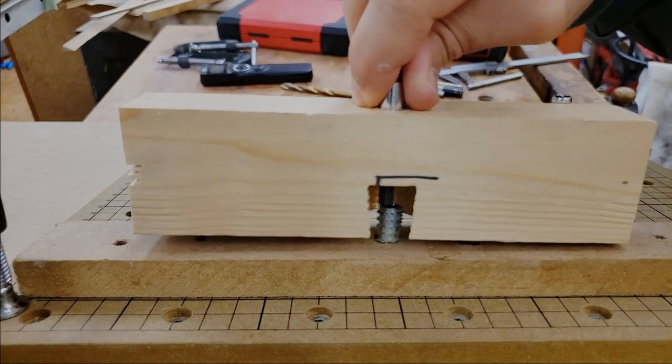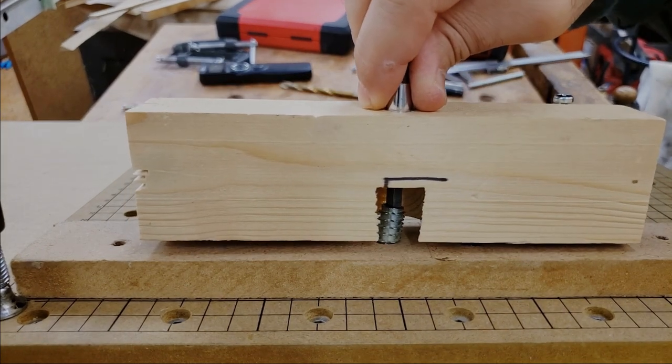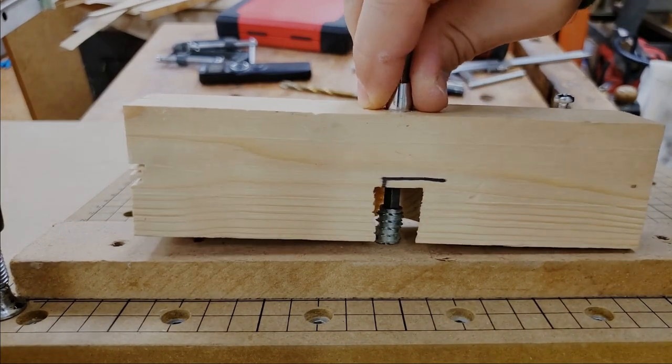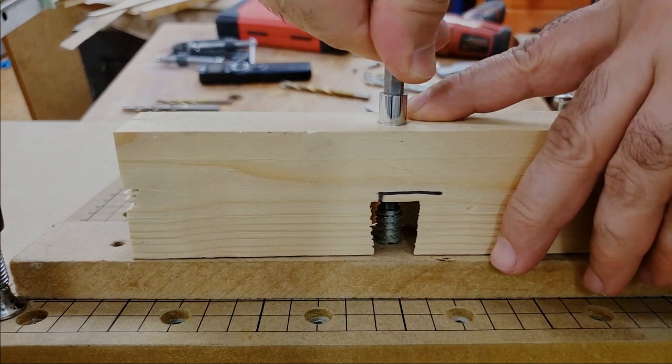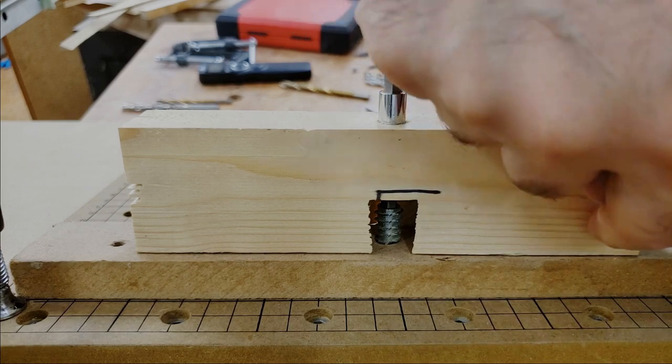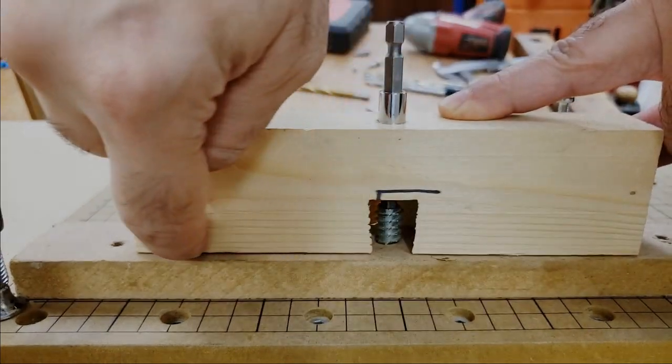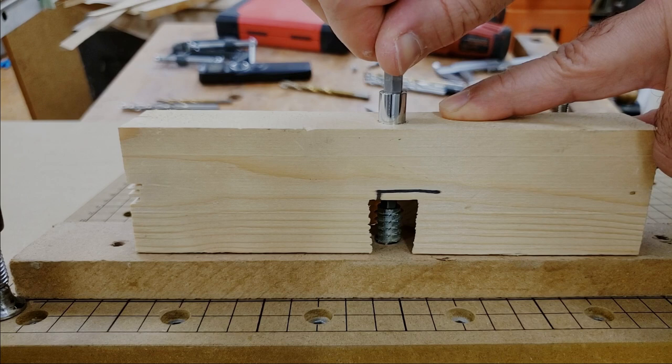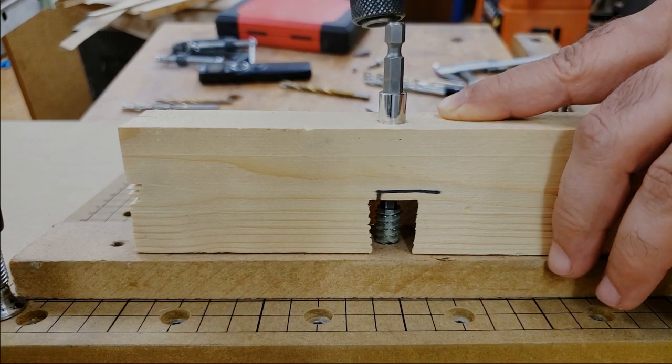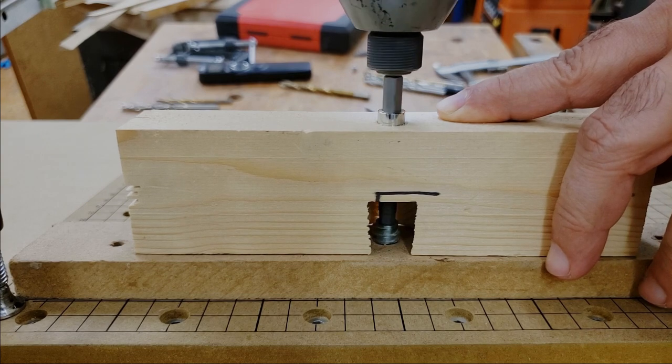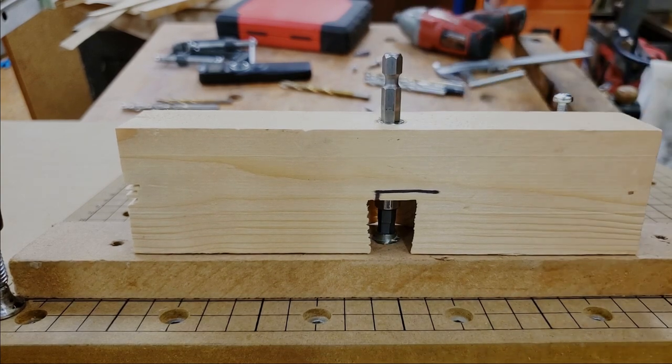What I do next is come on top of the insert and try to find the hex holes. It might require a little twisting and turning and then I make sure that the entire jig is flat on the surface and then I use the screwdriver or the electric one to tighten it. And that's it.